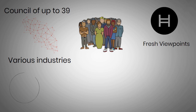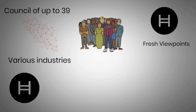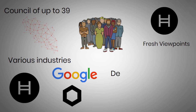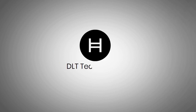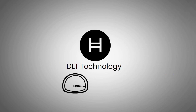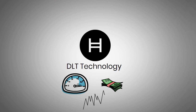So far, Hedera Hashgraph Network's council members include Boeing, Google, Chainlink Labs, Deutsche Telekom, LG, Dentons, Nomura, and many other well-known companies. Hedera Hashgraph uses its unique DLT technology instead of a blockchain, which improves speed, cost, and scalability.